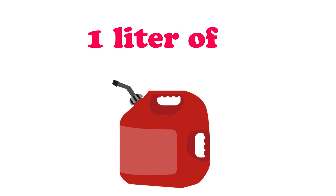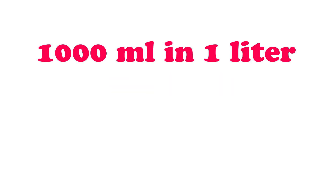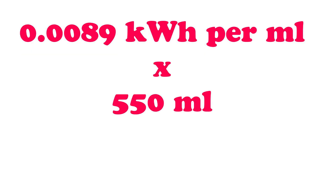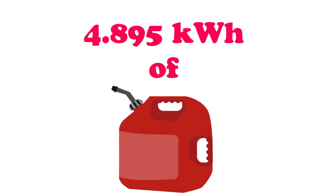One liter of gasoline is equal to 8.9 kilowatt hours. There are 1,000 milliliters in one liter, so we divide that 8.9 kilowatt hours per liter by 1,000 milliliters, which gives us 0.0089 kilowatt hours per milliliter. We then multiply that by 550 milliliters, and that gives us 4.895 kilowatt hours of gasoline.